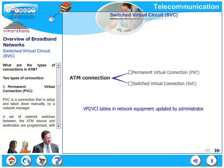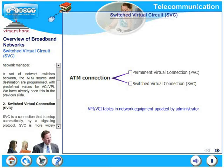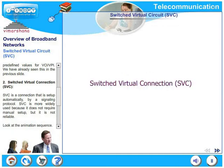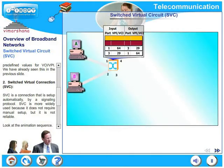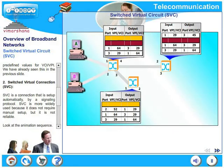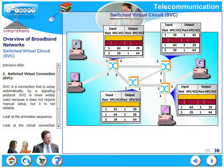The second type of connection is Switched Virtual Connection, SVC. This is a connection that is set up automatically by a signaling protocol. SVC is more widely used because it does not require manual setup, but generally it is not very reliable.